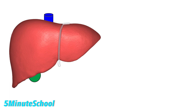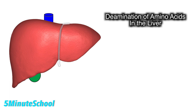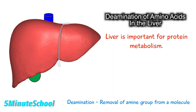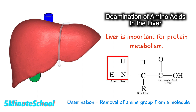In today's video we're going to be talking about the deamination of amino acids in the liver. The liver is quite important in protein metabolism. The hepatocytes of the liver synthesize quite a lot of proteins, particularly the ones in the plasma. One of the most important roles of the liver is protein metabolism, and also its process of deamination.